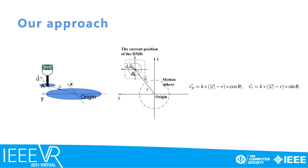Notice that when the HMD is within the defined motion sphere, the UAV will stay still. This design is because in a traditional rate-based control system, when a user stays still at the origin and looks around, a slight position offset of the head is inevitable, which causes unintended motion of the UAV. To avoid this, within a predefined distance R from the origin, we only map the rotation of the HMD to that of the camera and keep the UAV hovering.